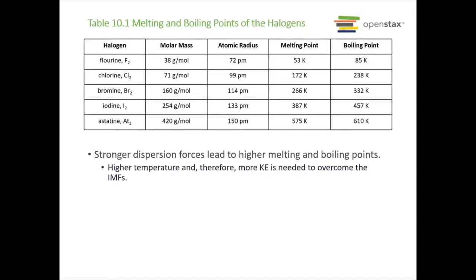The less dispersion forces, the lower the melting point or boiling point. The melting point is the temperature at which a solid becomes a liquid; the boiling point is where the liquid becomes a gas. For the halogens — remember they're all diatomic — as the molar mass goes up, the atomic radius also goes up, and those melting points and boiling points all go up.